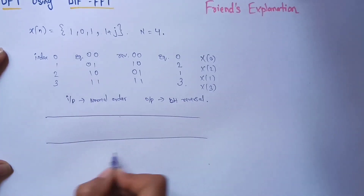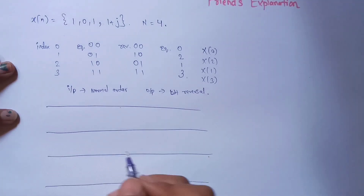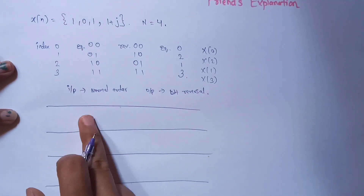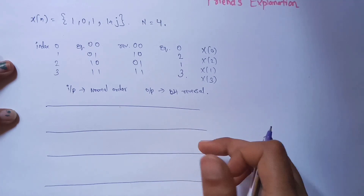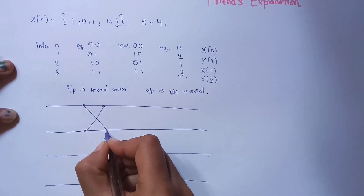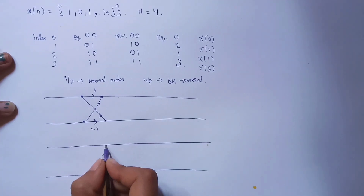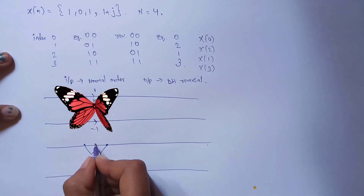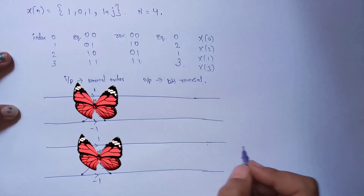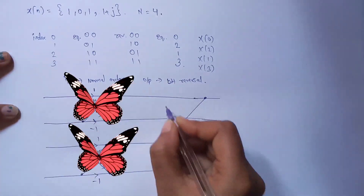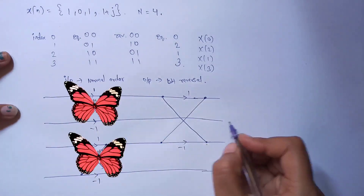Now let's draw a butterfly diagram for a 4-point DIF-FFT. I will take 4 straight lines. As this is DFT converting time domain to frequency domain, we take separate butterflies and as we go towards the right hand side we overlap one butterfly on another. The first butterfly has the head with coefficient 1 and the tail with minus 1. The second butterfly follows the same structure.